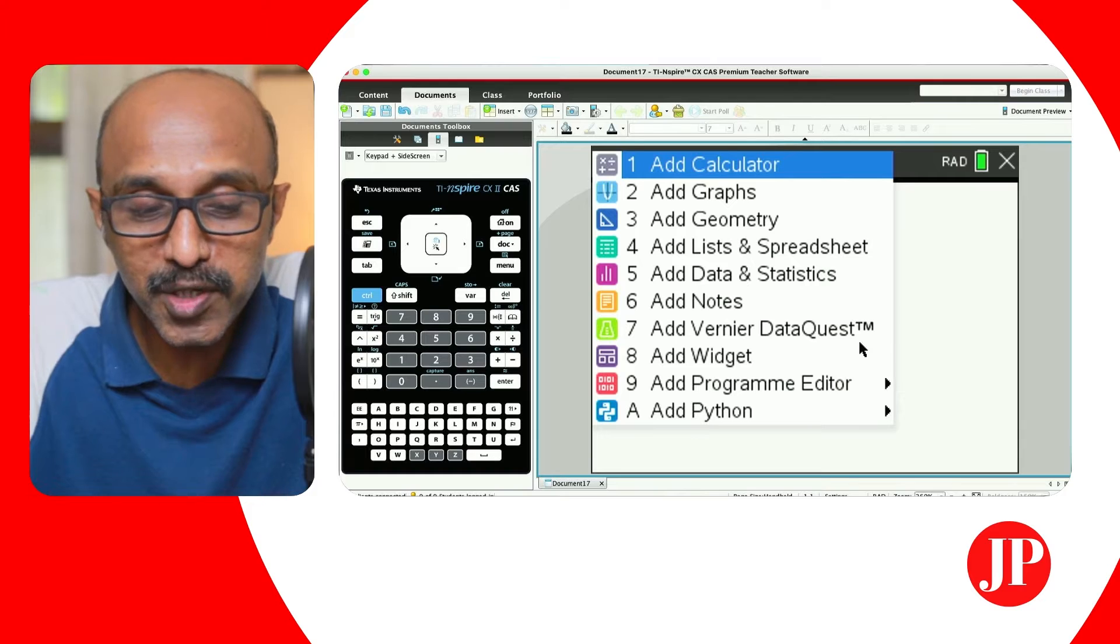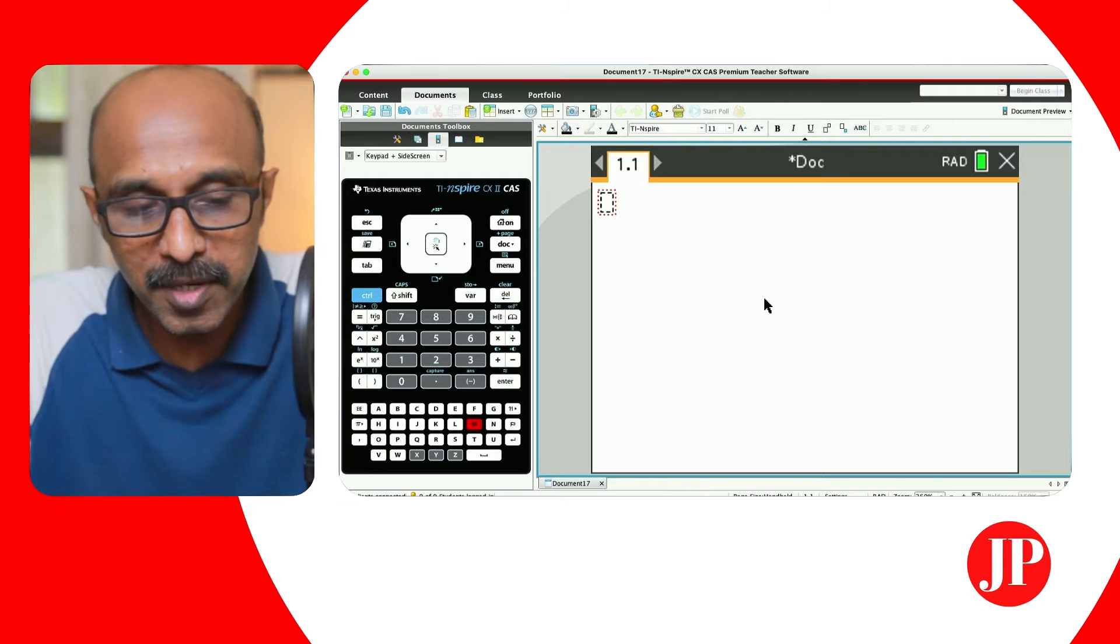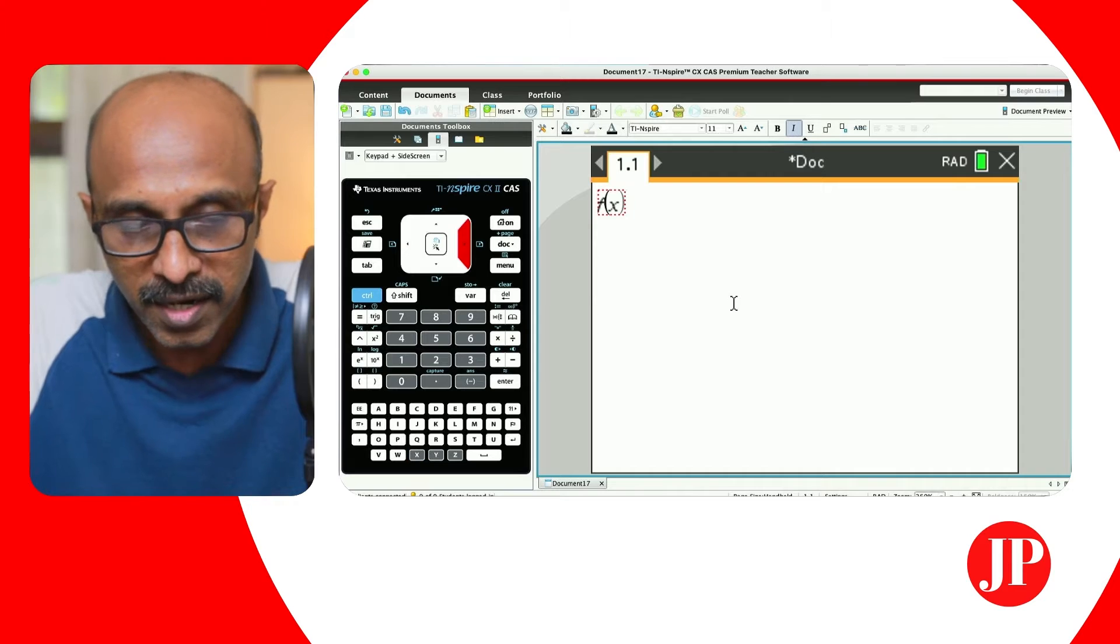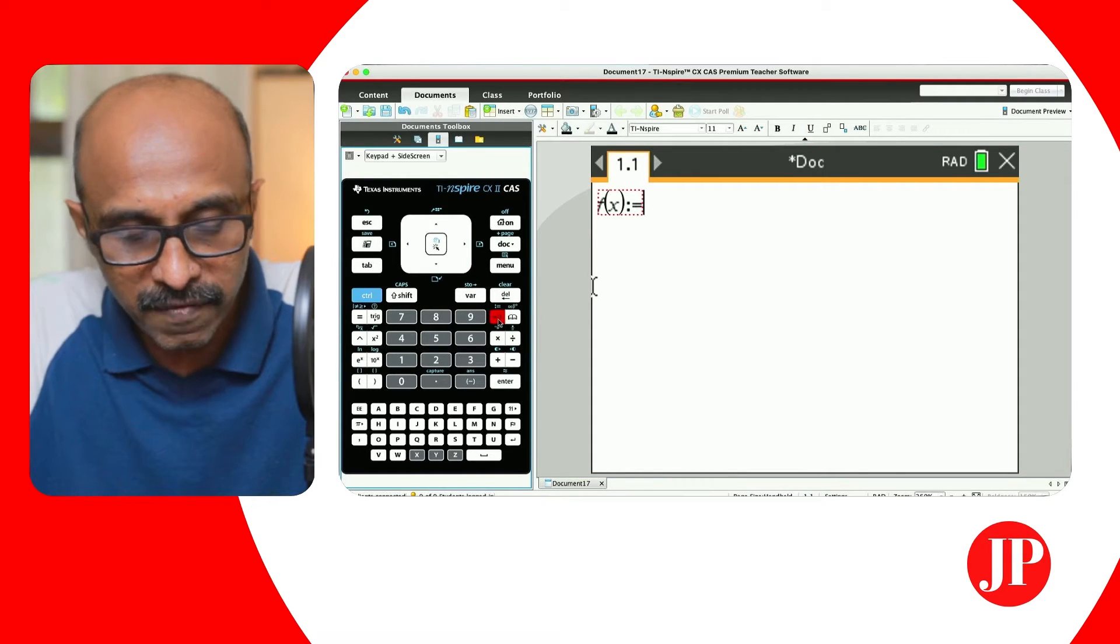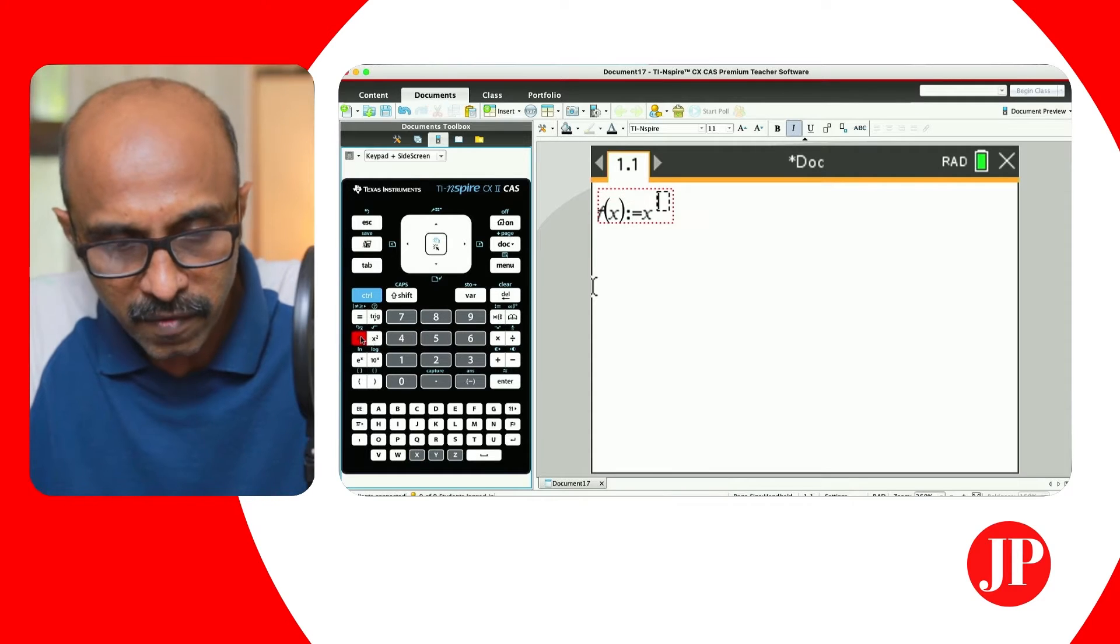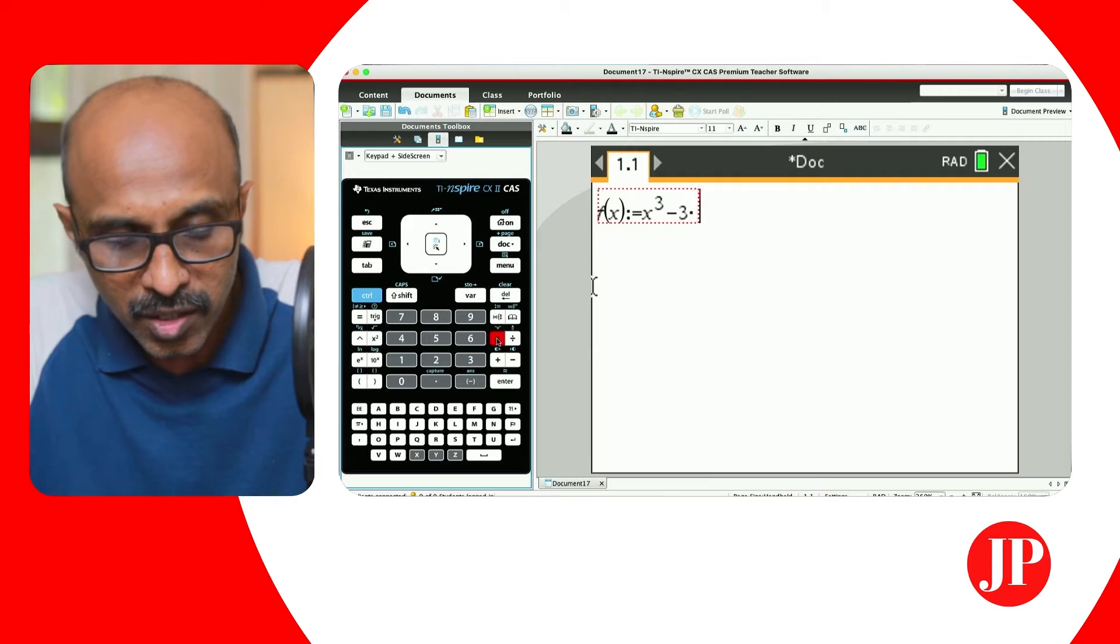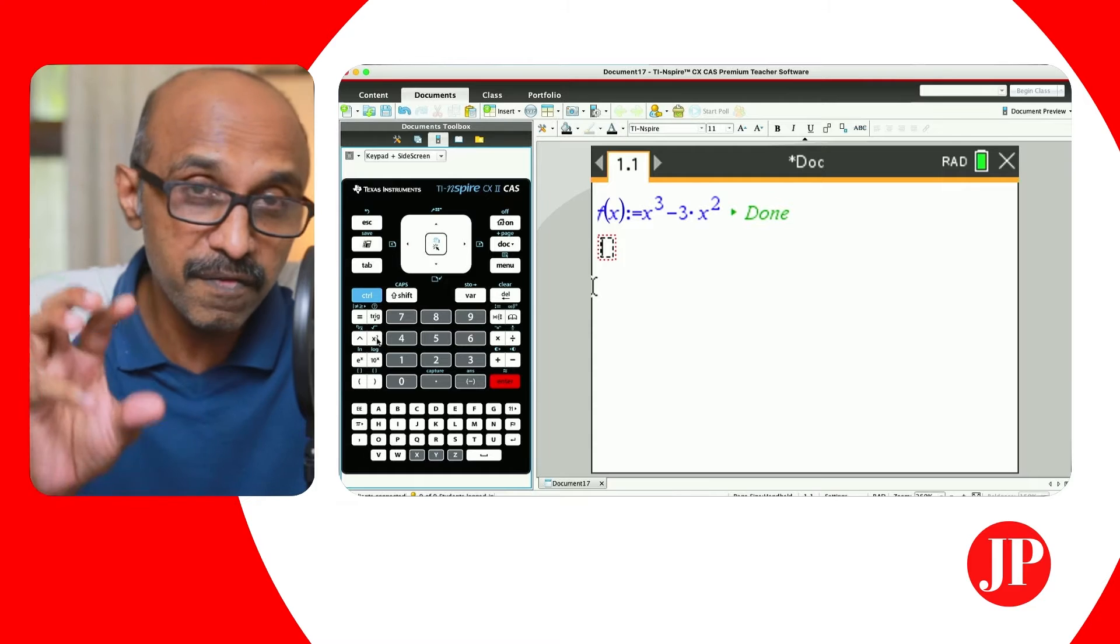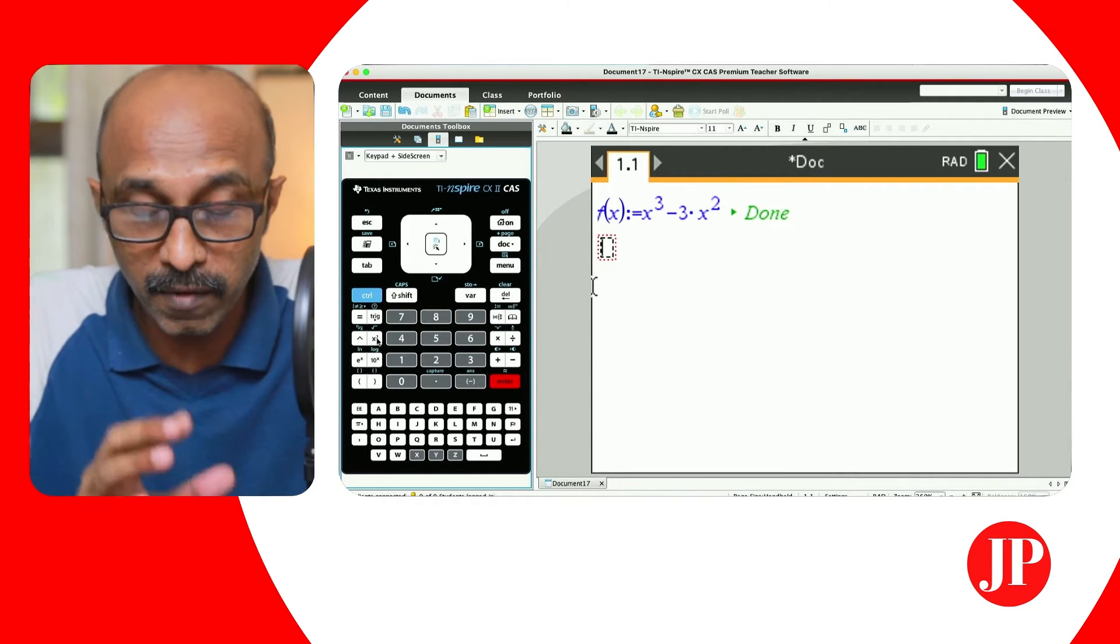For the purpose of this demonstration I'm going to use the CAS version of the TI Inspire CX2. So let's go and add a notes page. Command M is going to insert the math box and there let's insert a function, a nice cubic function as our example. So define f(x) = x^3 - 3x^2, and when we hit enter it's going to say done. That means f(x) is now stored into the memory of the calculator.